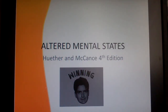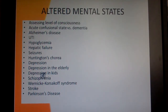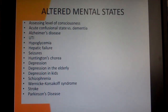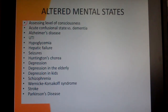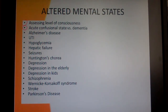In this module we're going to talk about altered mental states. We'll look at some of the mechanisms for assessing the level of consciousness, different scales that we use to see how conscious or unconscious somebody is, and then we'll look at the difference between a confusional state versus dementia.